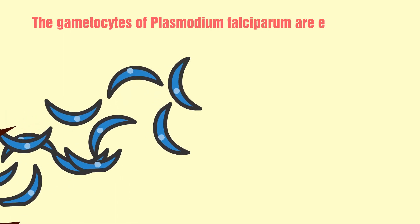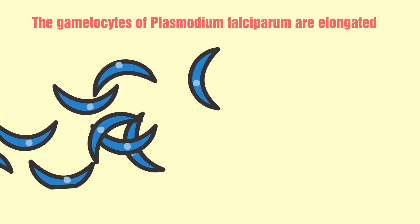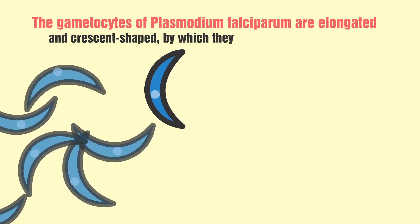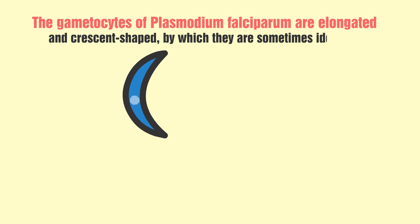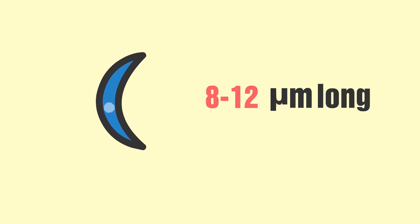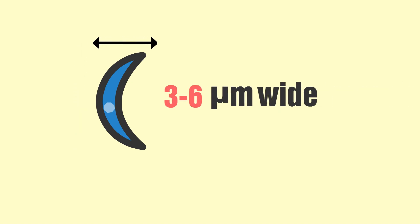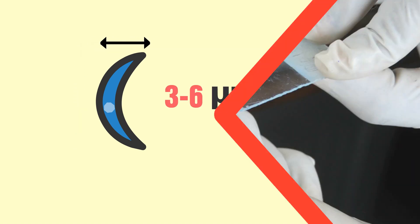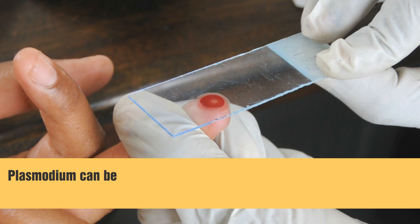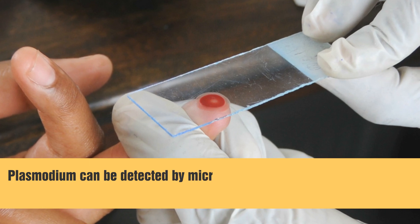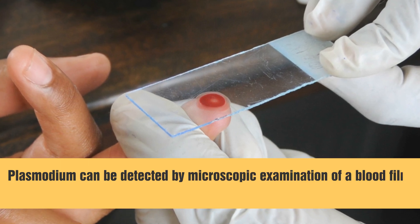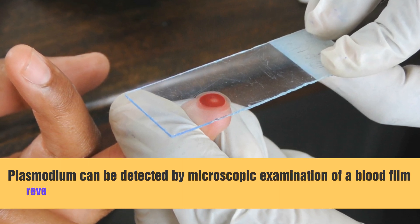Trophozoites feed on the hemoglobin and form a granular pigment called hemozoin. Unlike other species of Plasmodium, the gametocytes of Plasmodium falciparum are elongated and crescent-shaped, by which they are sometimes identified. A mature gametocyte is 8 to 12 micrometers long and 3 to 6 micrometers wide.